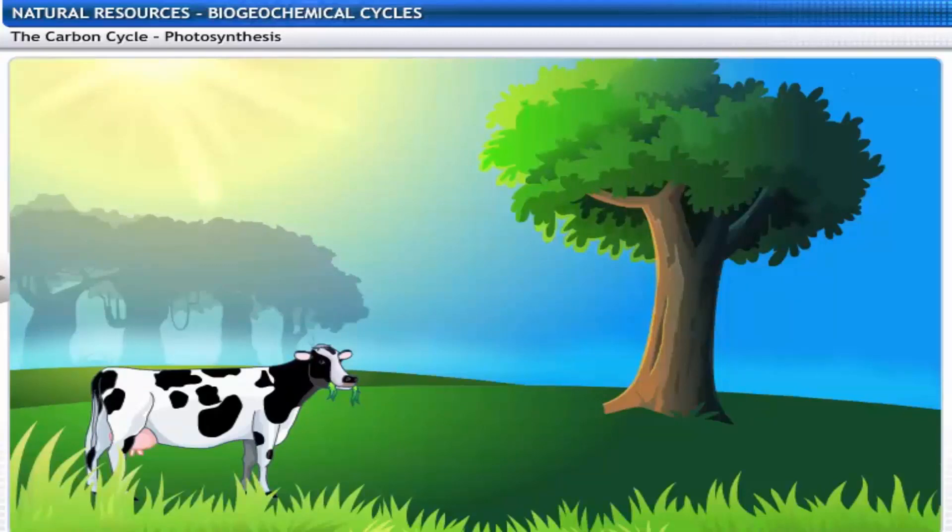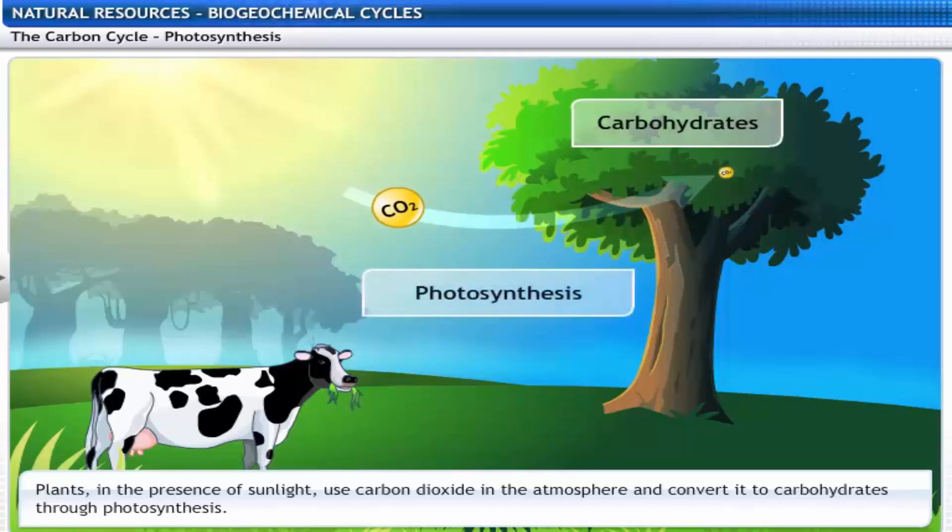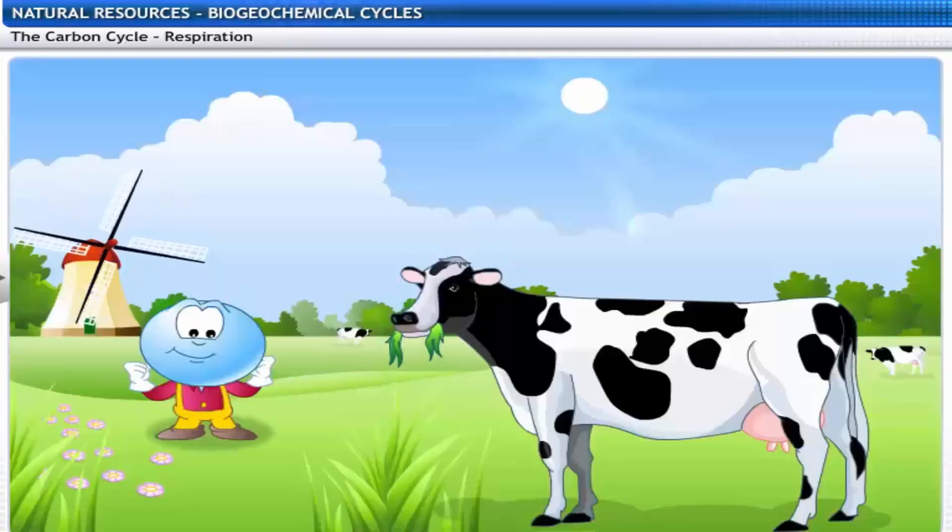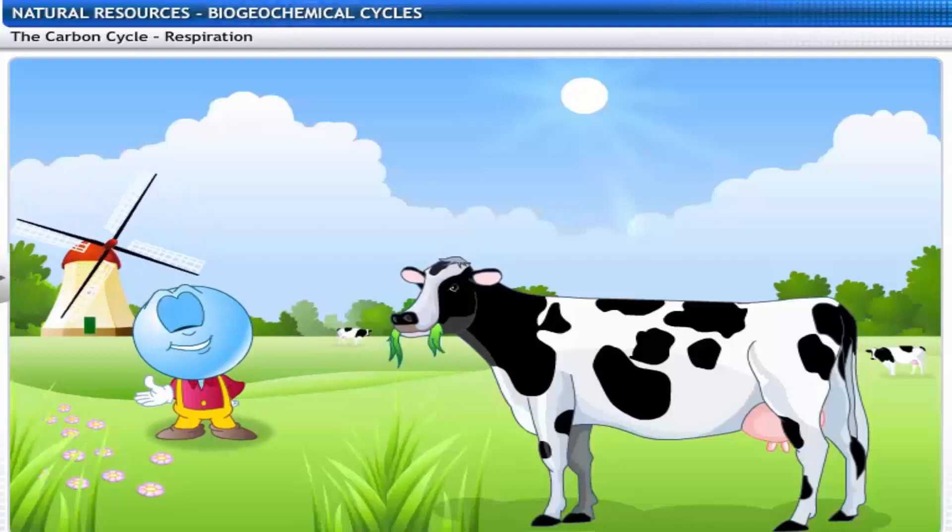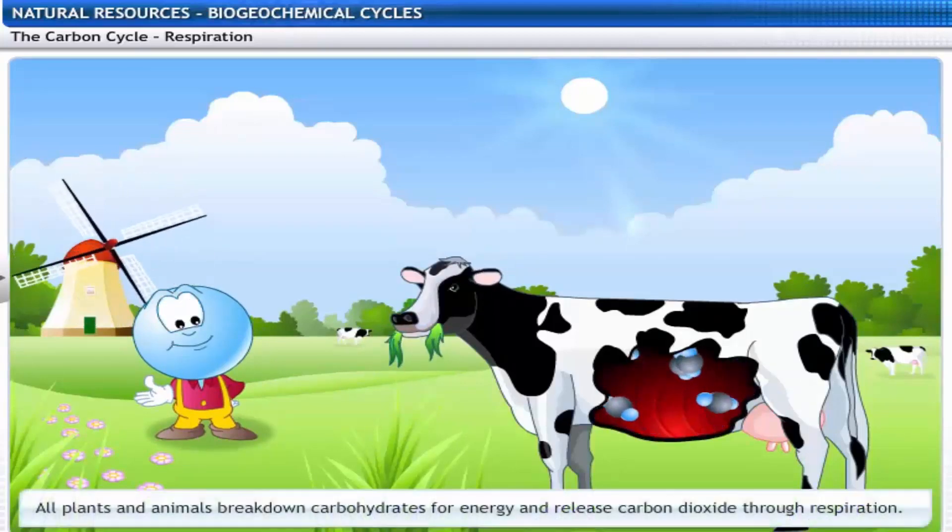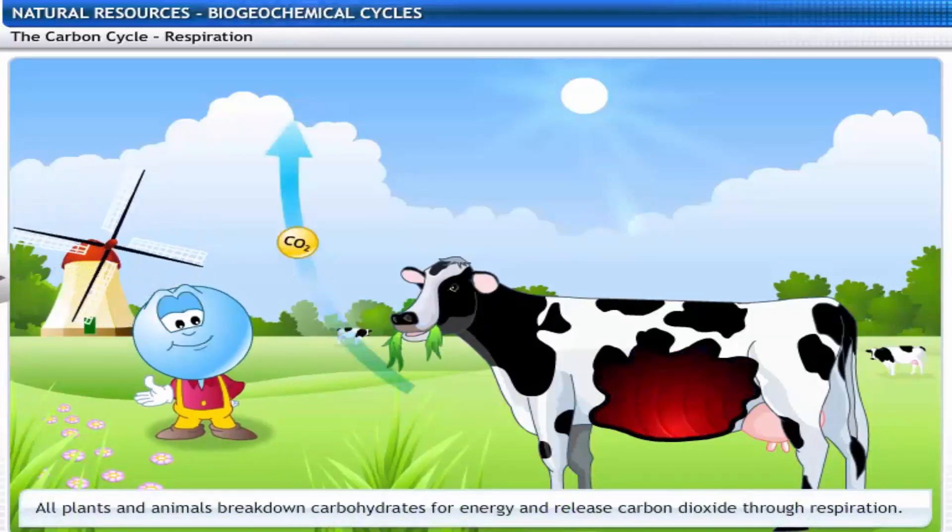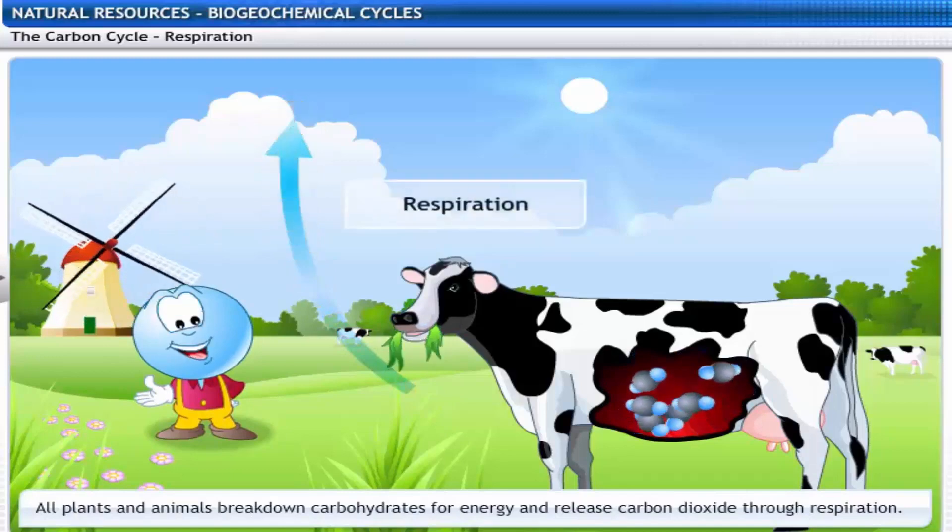The cycle starts in plants. Plants, in the presence of sunlight, use carbon dioxide in the atmosphere and convert it to carbohydrates through photosynthesis. Wondering what happens to the carbohydrates? Well, all plants and animals break down carbohydrates for energy and release carbon dioxide through respiration.